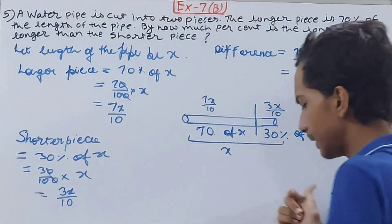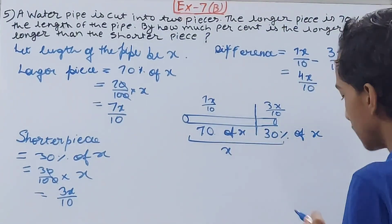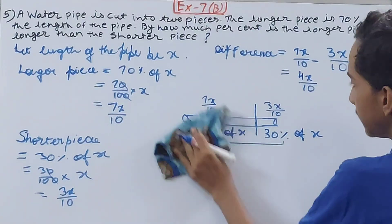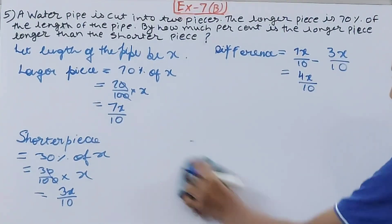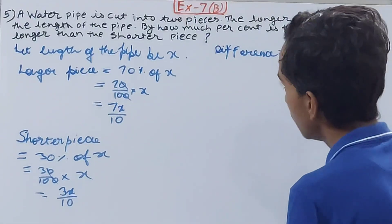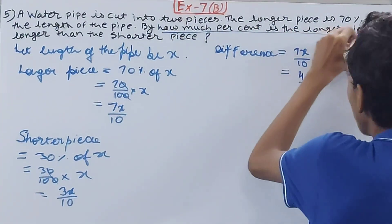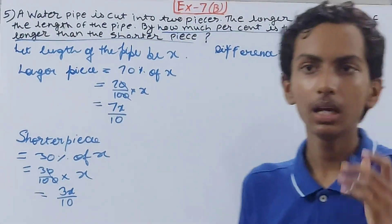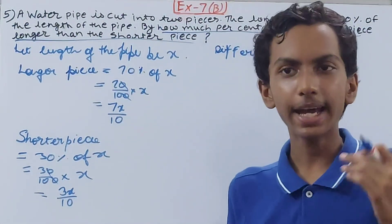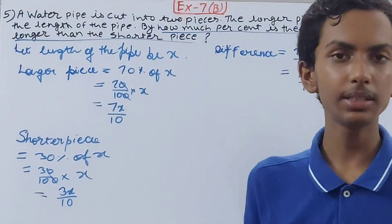Now we come to the final part of this question that says we have to find by how much percent is the longer piece longer than the shorter piece. We already know the actual value: the longer piece is longer than the shorter piece by 4x/10.